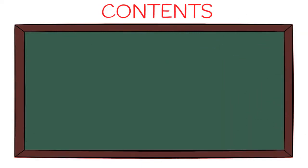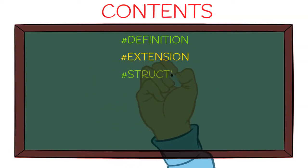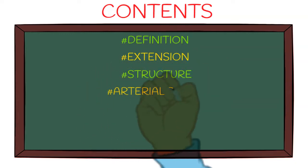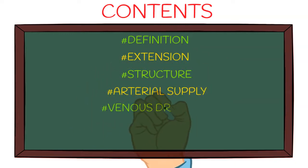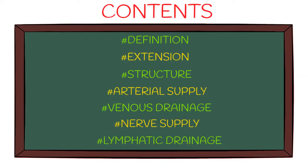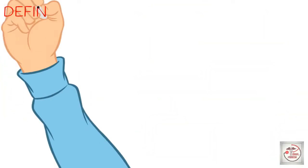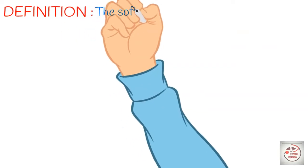The subtopics of scalp we are going to cover in this video are: definition, extension, structure, arterial supply, venous drainage, nerve supply, and lymphatic drainage. Let's get started with the definition.